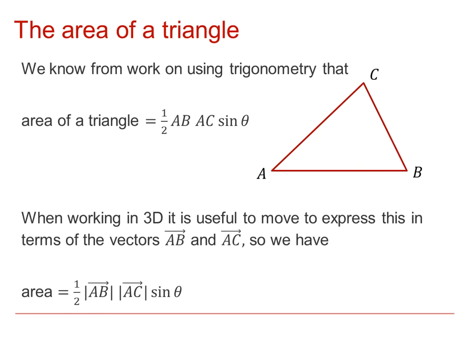You will have met in work on trigonometry the idea that the area of a triangle can be found by half of the length of the sides multiplied together and then sine of the angle between them. So this would be theta where we're looking at the length of AB and AC.